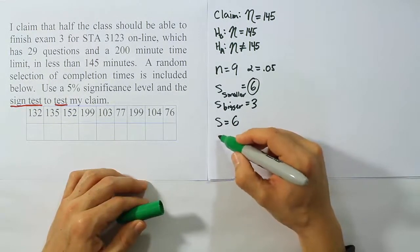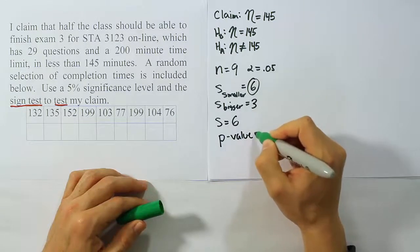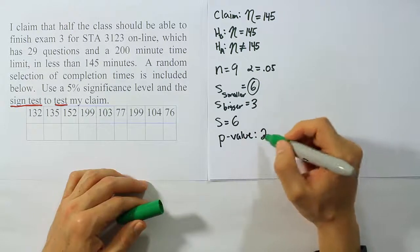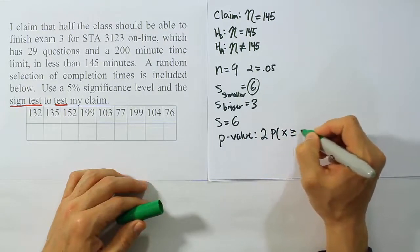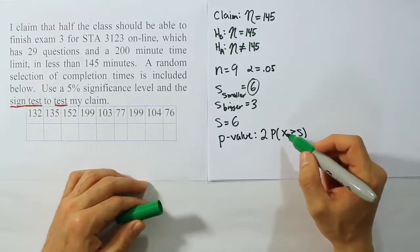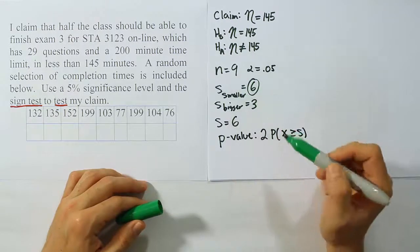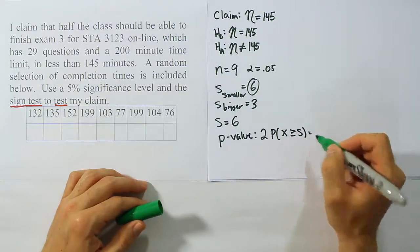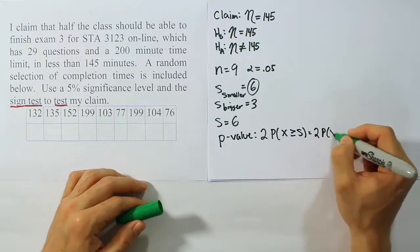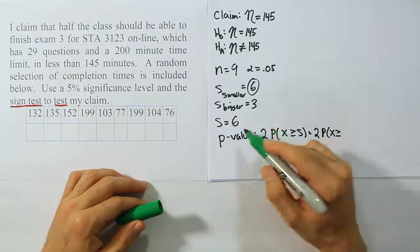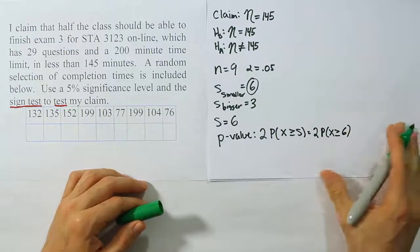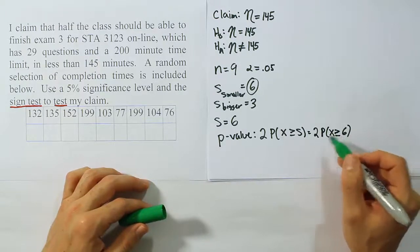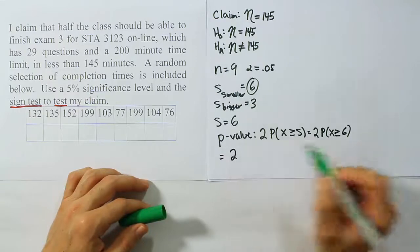Now we have to get our p-value. Remember that our p-value is defined as 2 times—the 2 comes from the fact that it's a two-tailed test, otherwise you would not have the 2. But the rest of it would be the same. So the p-value is 2 times the probability that x is greater than or equal to s. Now we know that our table does not allow us to get probabilities like this. We can't do greater than or equal to. It only does less than or equal to. So we've got to convert this into a statement that involves less than or equal to.